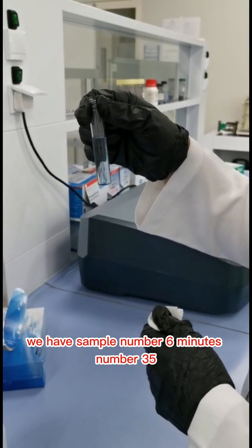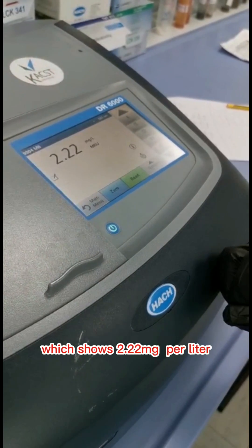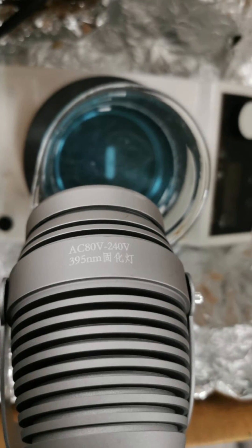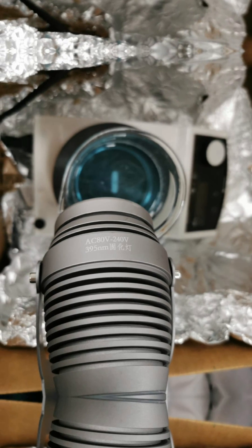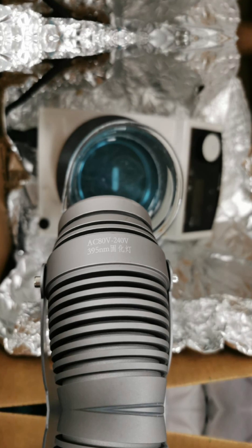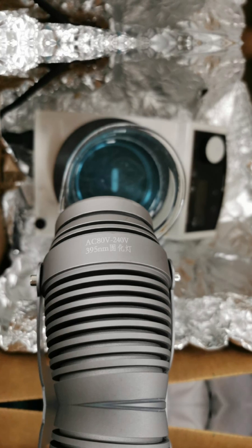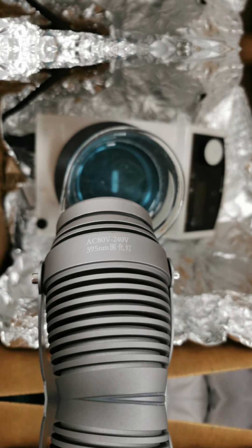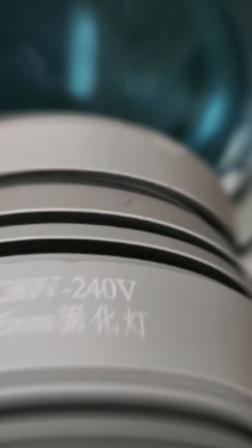We have sample number 6, minute number 35, which shows 2.22 mg per liter. The last concluding concentration was around 2 ppm, which shows that the catalyst and oxidizing agent we used achieved 90% degradation of the dye. This proves that the catalyst has the potential of degrading the dye.